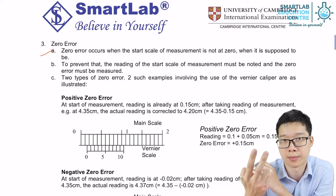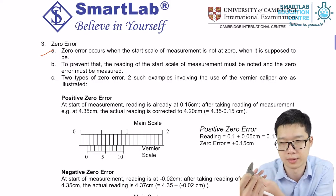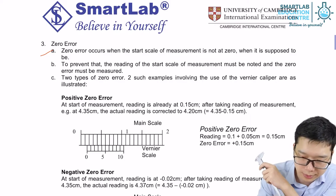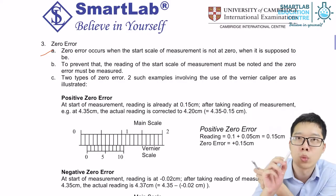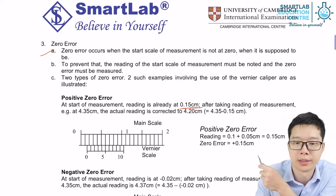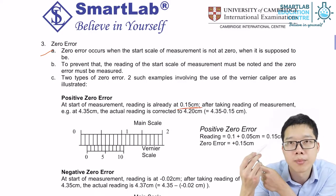There are two types of zero errors. First one, positive. Second one, negative. So what does it mean by positive zero error? It means without putting anything, we have already gotten a positive reading. So that is called a positive error.